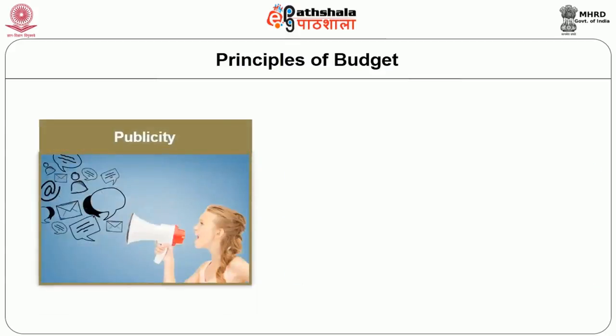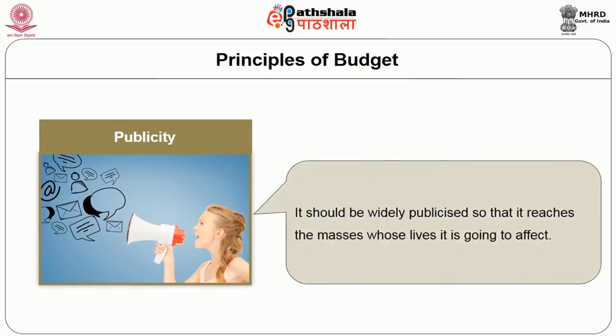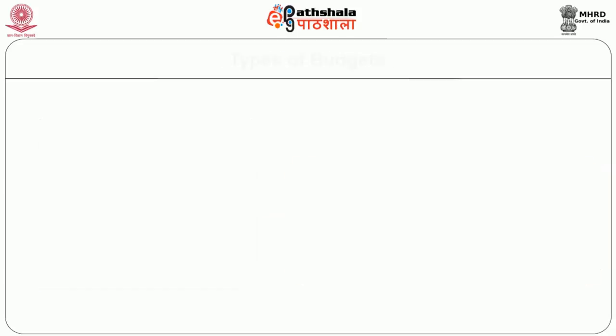Seventh, Publicity — publicity is considered to be an important element of a good budget. It is this principle which makes the budget reach the masses whose lives it is going to affect. Moreover, the citizens are considered to be the rulers in a democracy, and so they have every right to know the expenditure of the government.